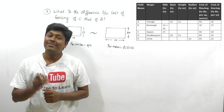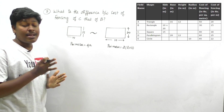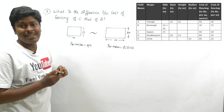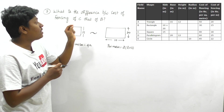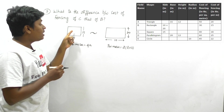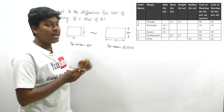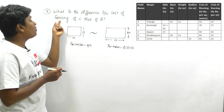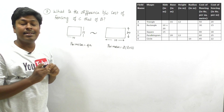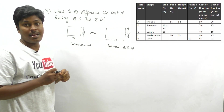The second question asks for the difference between the cost of fencing of field C and field B. Field C is a square with side = 15, and field B is a rectangle with length = 10 and breadth = 20. Fencing equals perimeter, so we need to find the perimeter for both shapes.